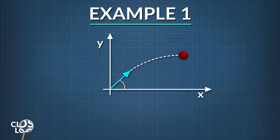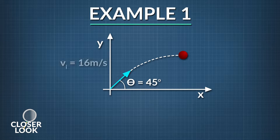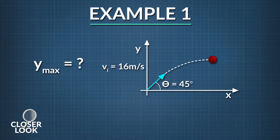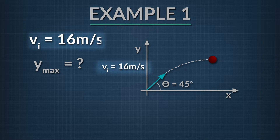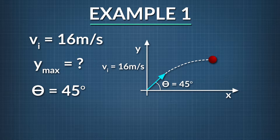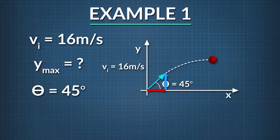Our first problem states that a ball is launched at an angle of 45 degrees above the ground at 16 meters per second. What is the maximum height the ball reaches? We start by making a note of the given variables and what we're solving for. The ball's initial velocity is 16 meters per second, and the ball is launched at an angle of 45 degrees. Part of that initial velocity lies in the vertical y-direction, and part of it is in the horizontal x-direction. We're going to figure out the maximum height the ball reaches, y sub max.